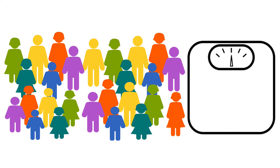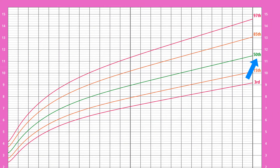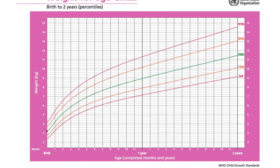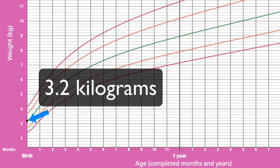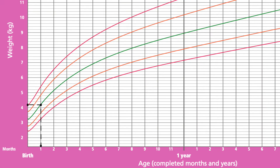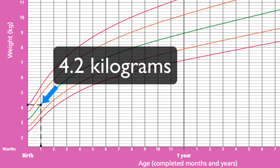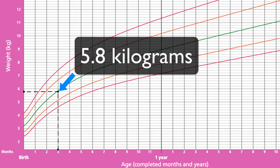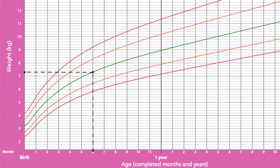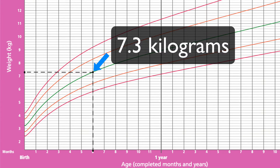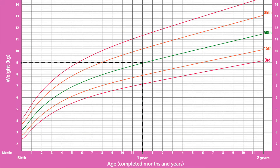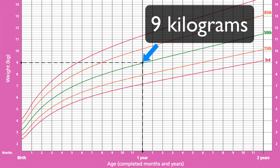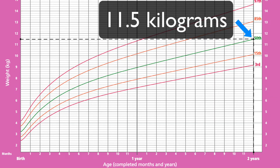Let's learn more about the average weight of a child, which lies along the 50th percentile line. The average birth weight of a girl is 3.2 kg. At 1 month, a girl's average weight is 4.2 kg; at 3 months, 5.8 kg; at 6 months, 7.3 kg; at 1 year, 9 kg; and at 2 years, 11.5 kg.